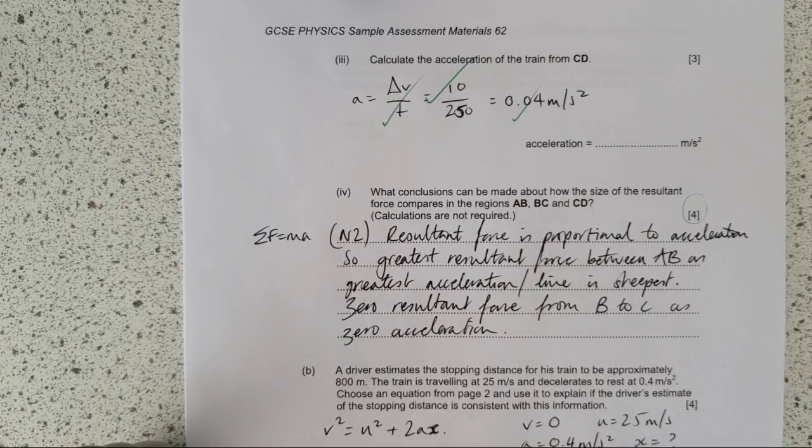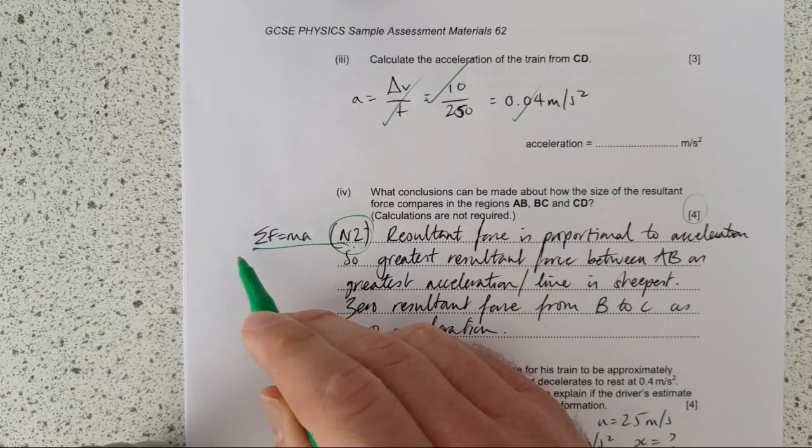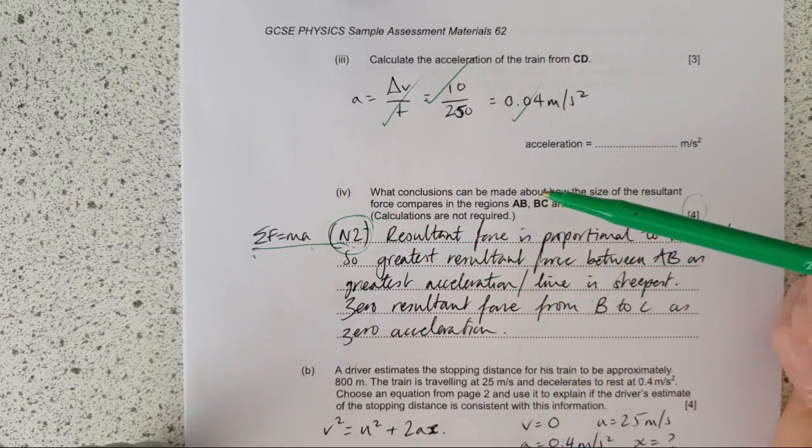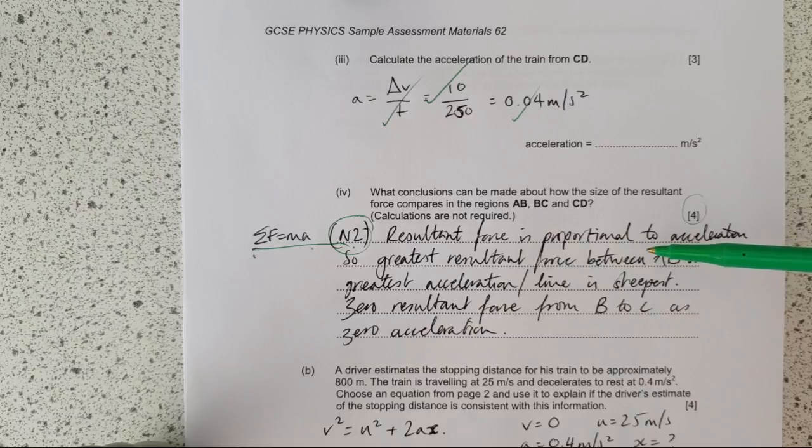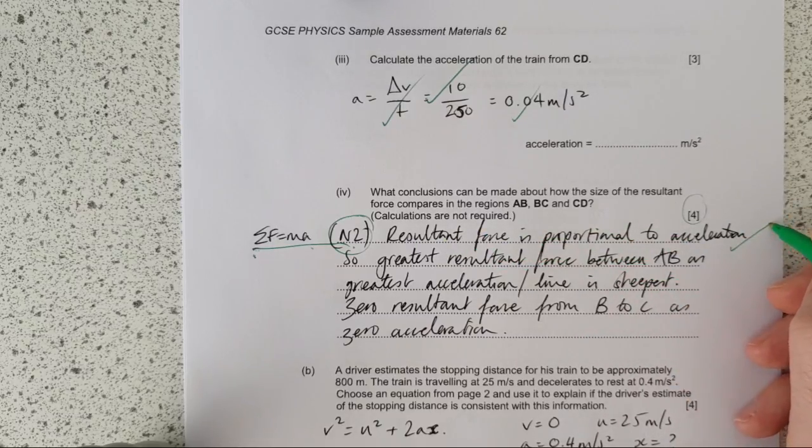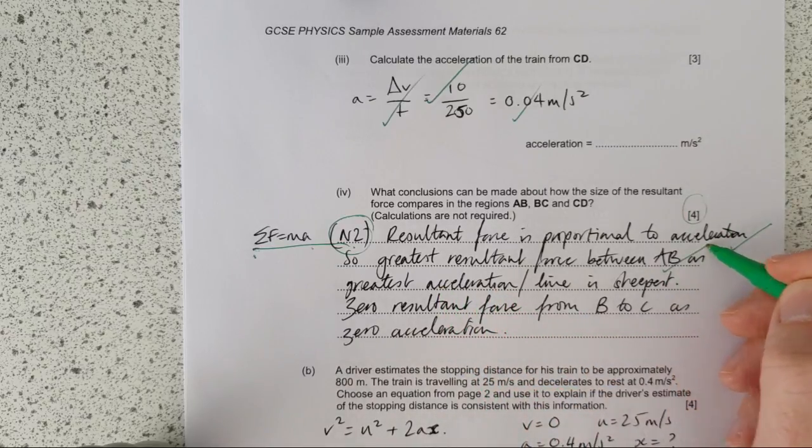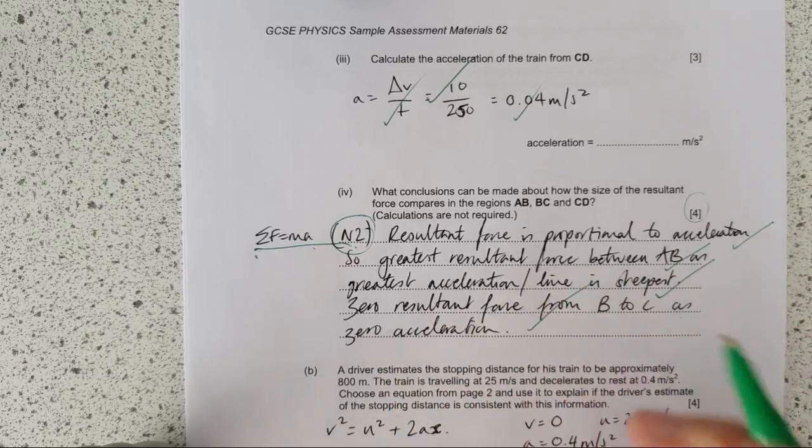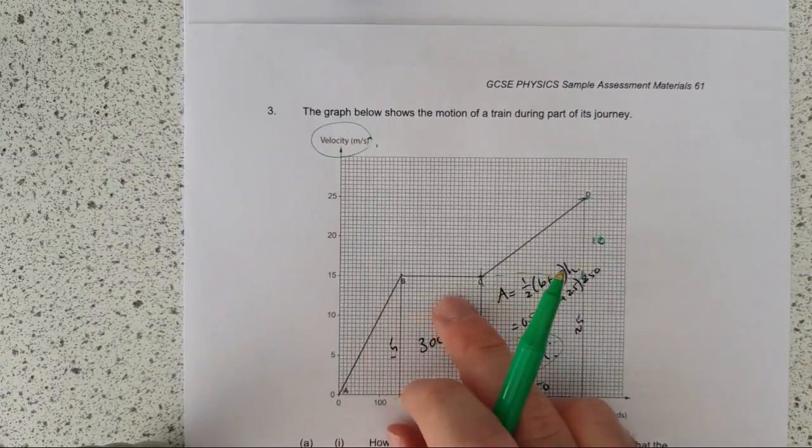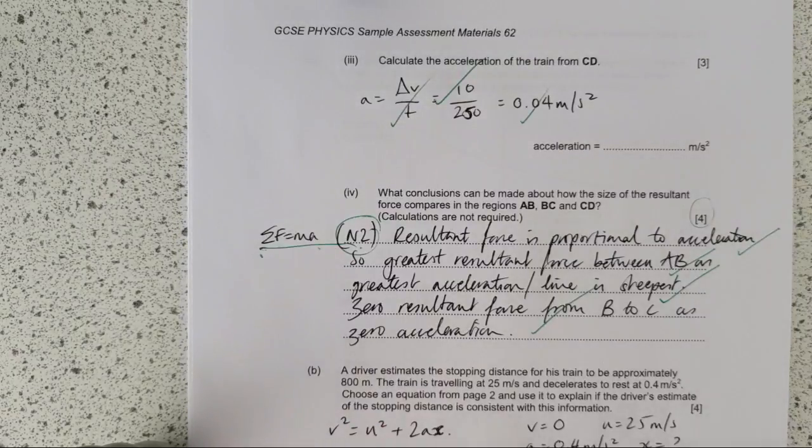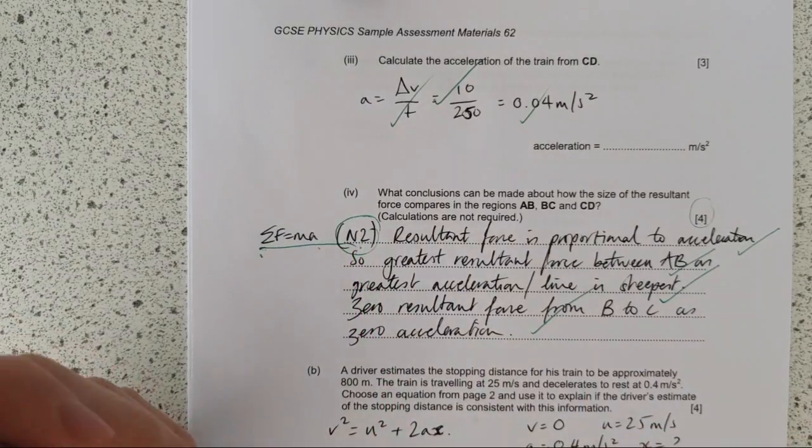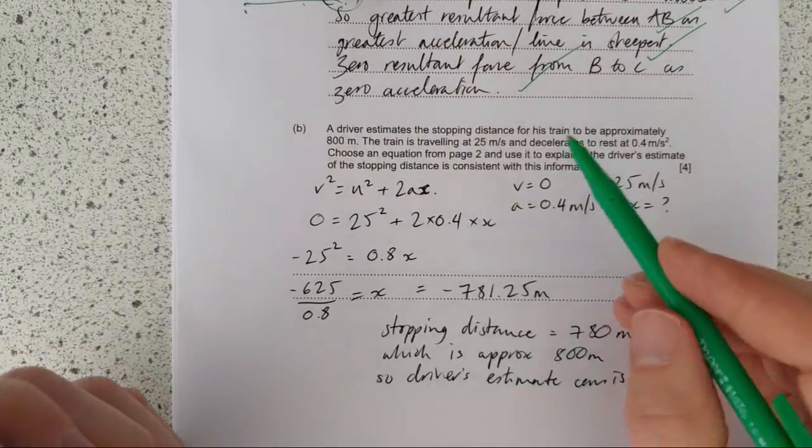Well, they've told you about resultant force, so the first thing you're going to think about is you're going to think about, well, this is actually Newton's second law. The resultant force is equal to M A. So you've been talking about accelerations, and you've said one area of the acceleration is greater, one area of the acceleration is less. So my first point is that the resultant force is proportional to acceleration - get a mark for that. So therefore, the greatest resultant force between A and B because it's the greatest acceleration, or because the line is steepest. So the resultant force from B to C, there is zero acceleration. Did you recognize that that's actually a Newton's second law question?